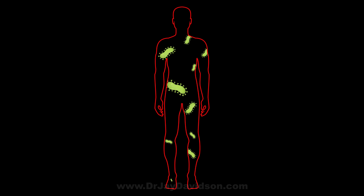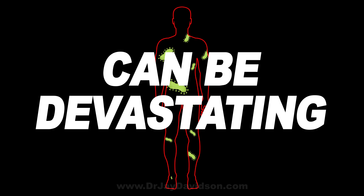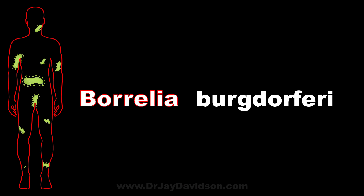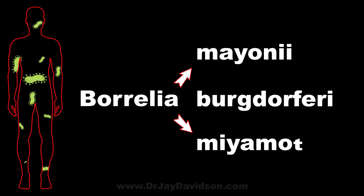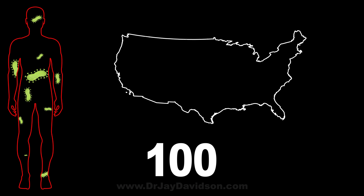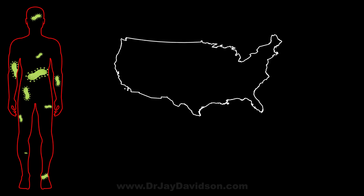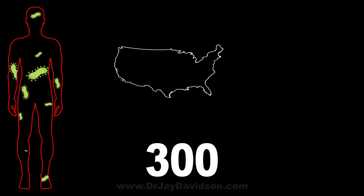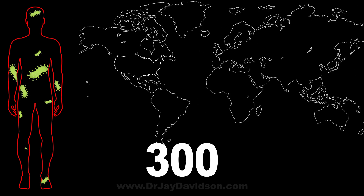Lyme disease is a bacteria that affects humans and can be devastating. The bacteria is technically called Borrelia borgdorferi, but there are also other Borrelia species like Myoni and Myomotai that cause Lyme disease as well. There are over 100 strains of Borrelia in the U.S. and over 300 different strains across the world.